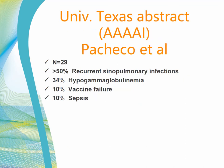There's also an abstract from the University of Texas that was at a conference a year ago, and they looked at 29 patients. They noted a very high rate of recurrent sinopulmonary infections. About a third of the patients had hypogammaglobulinemia, which is a low IgG. About a 10% rate of vaccine failure and about a 10% rate of sepsis.